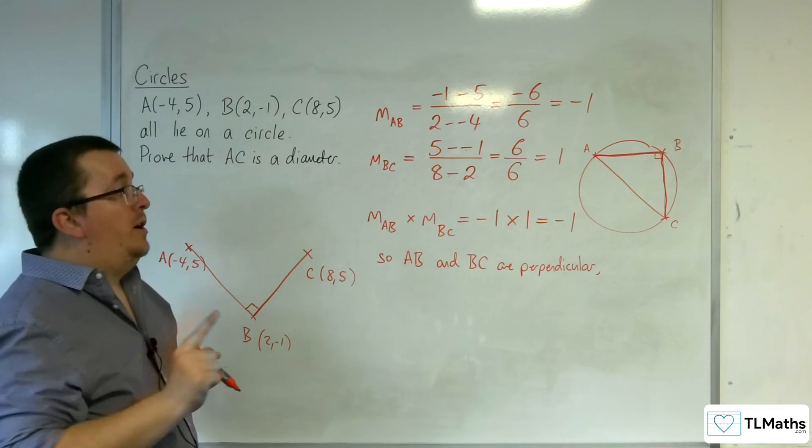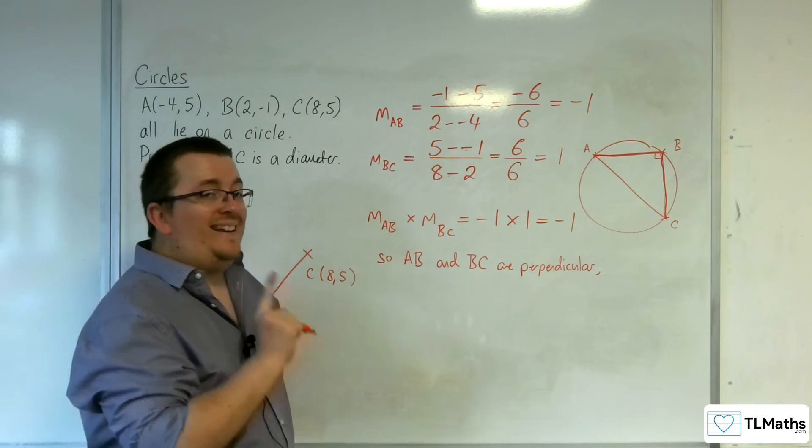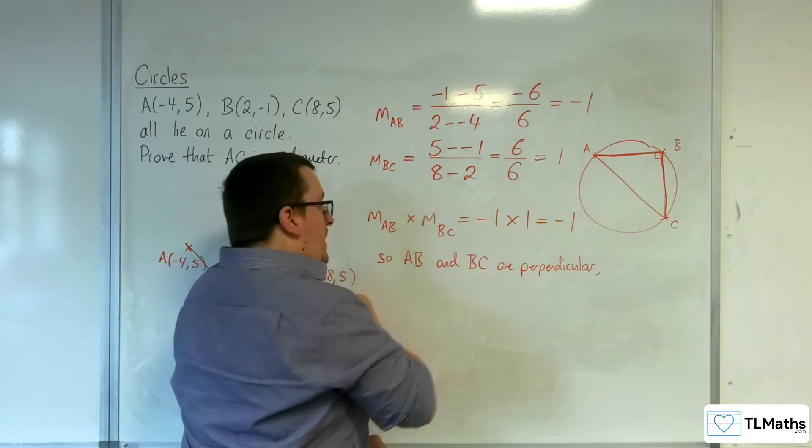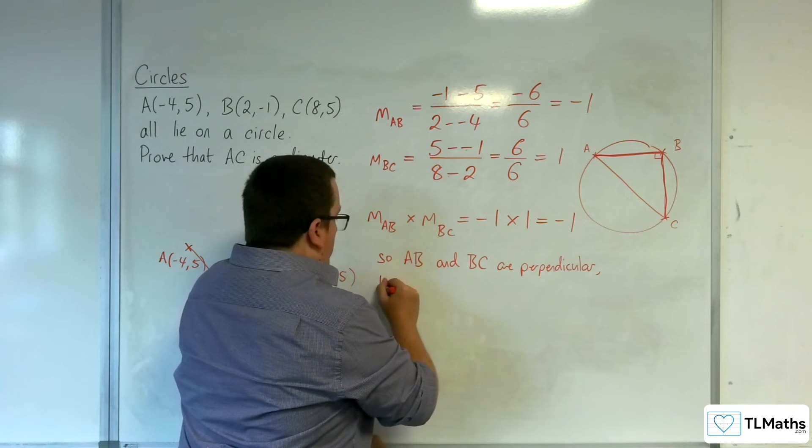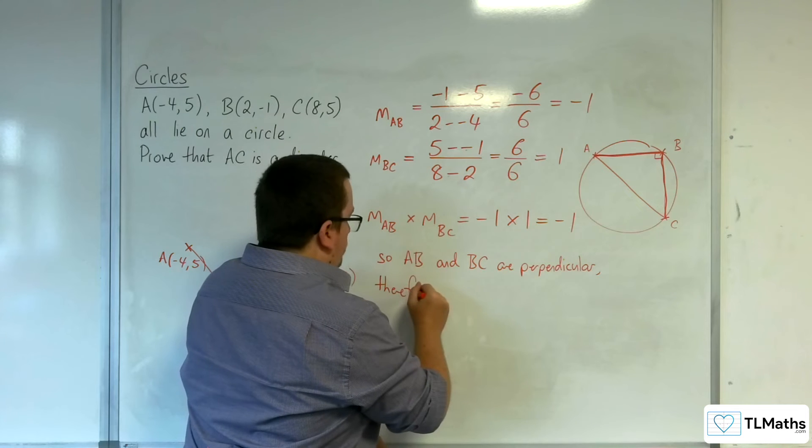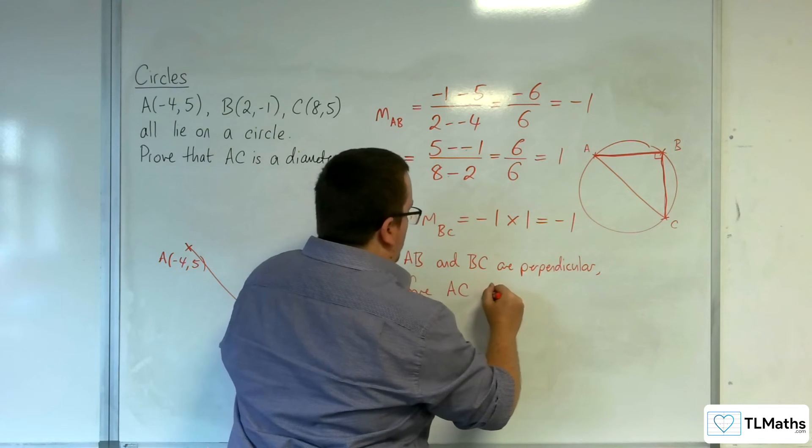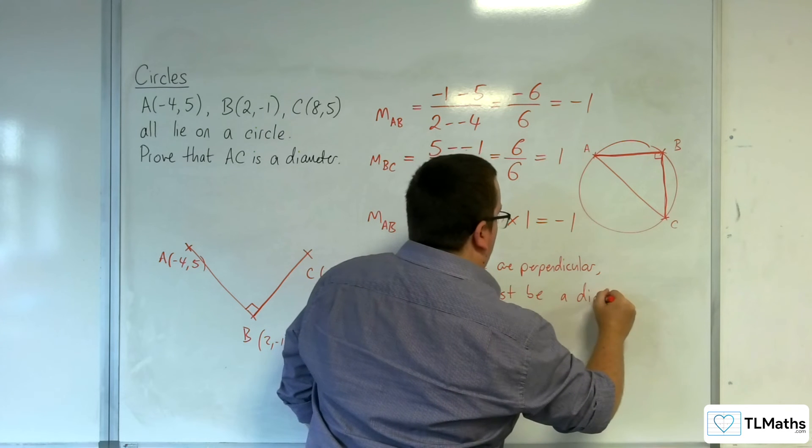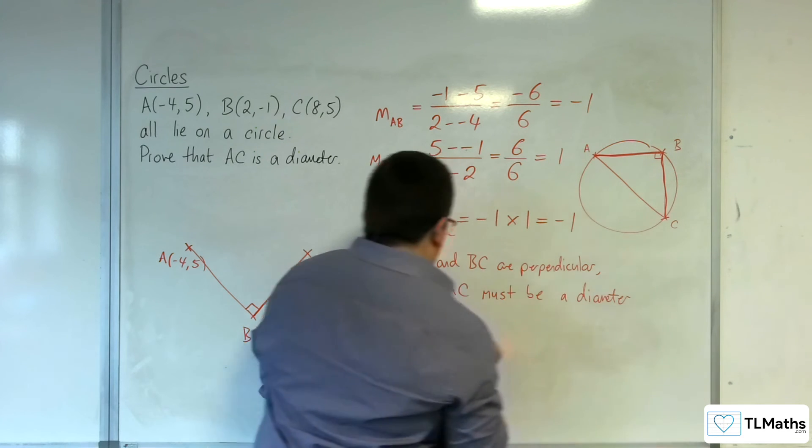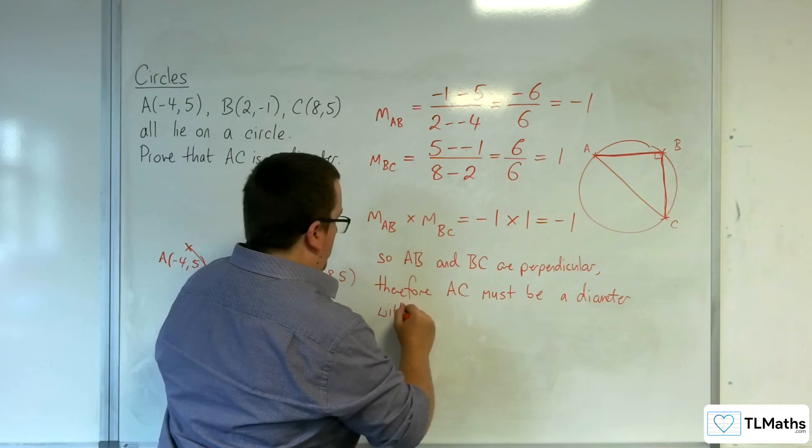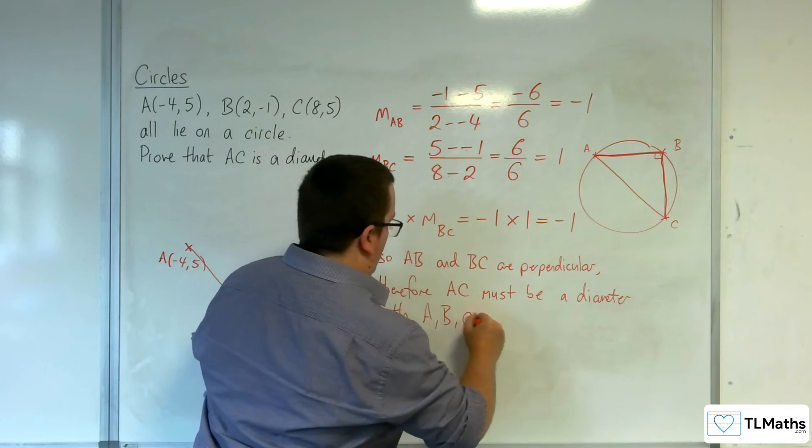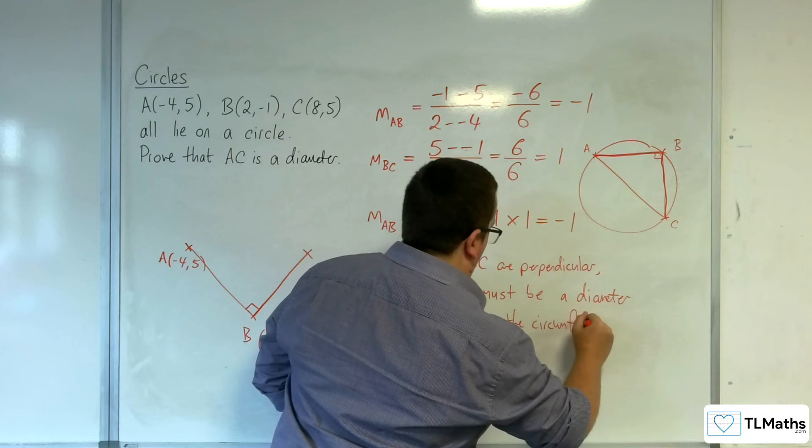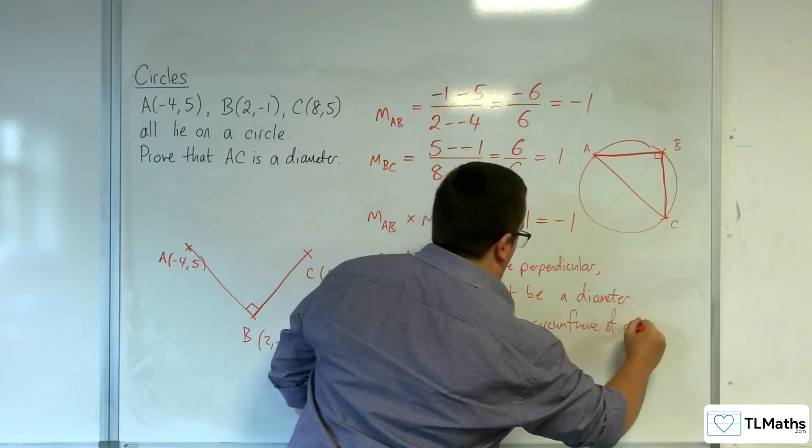hence by the circle theorem, that means that AC has to be a diameter. So, AB and BC are perpendicular, therefore, AC must be a diameter with A, B, C on the circumference of a circle.